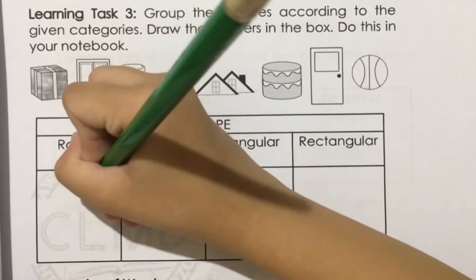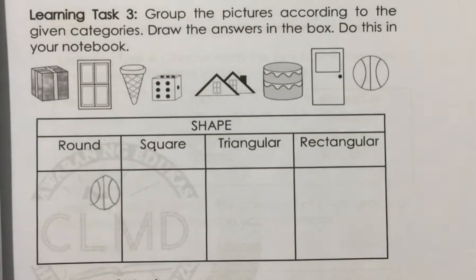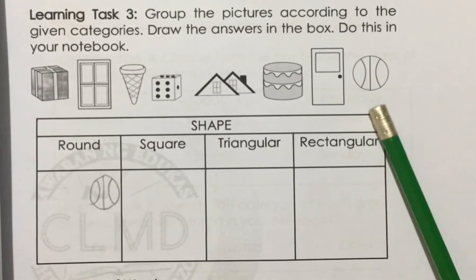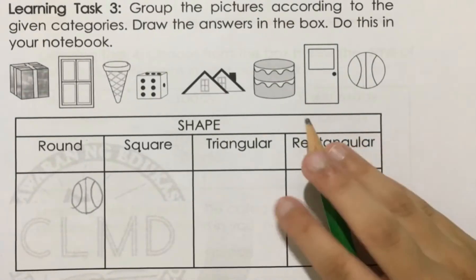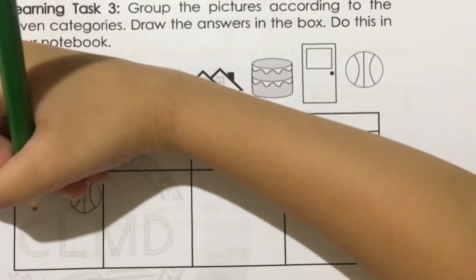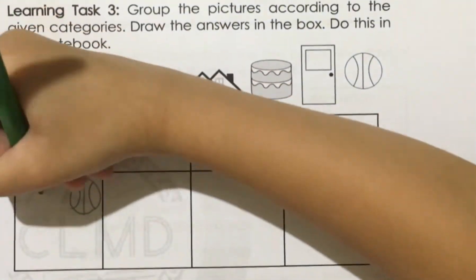And then that, and then that, and then that. It's a cake. Cake is round. Cake is round. Let's copy the cake. How am I going to draw it?